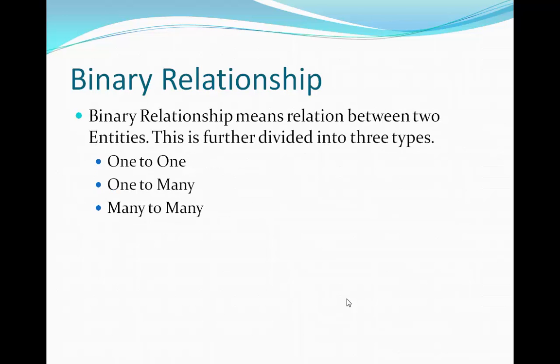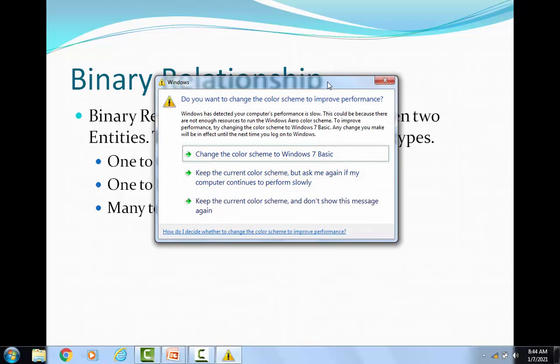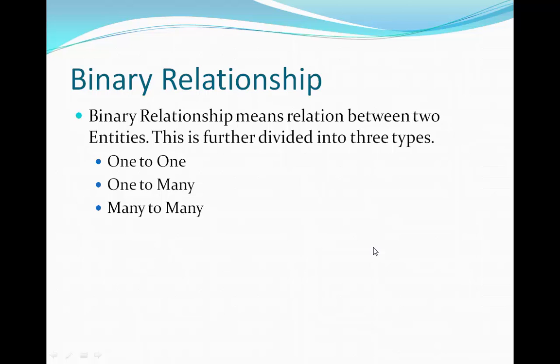The first type is binary relationship. A binary relationship is one that is established among exactly two entities. Binary relationships are further classified into three types: one-to-one relationship, one-to-many relationship, and many-to-many relationship.